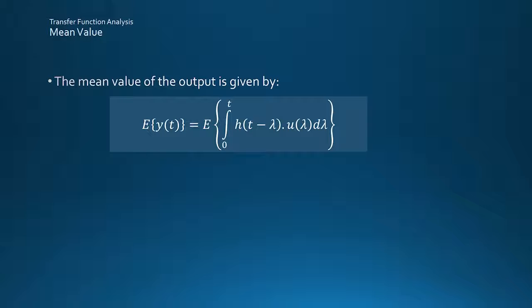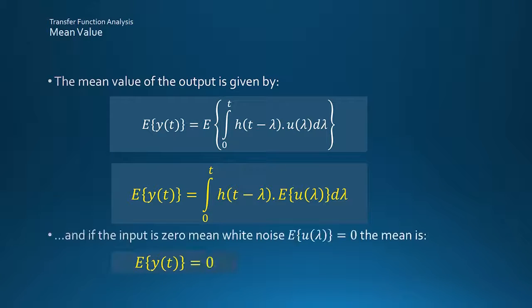Moving on from autocorrelation to the mean value of the output by taking the expectation of the output, and moving the expectation inside the integral gives the result for the mean of the output. And if the input is zero-mean noise, then the output response is also zero-mean.